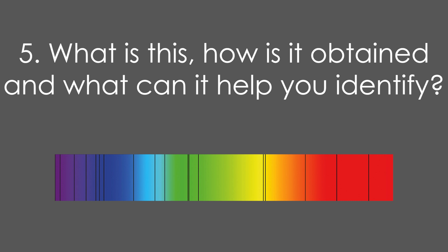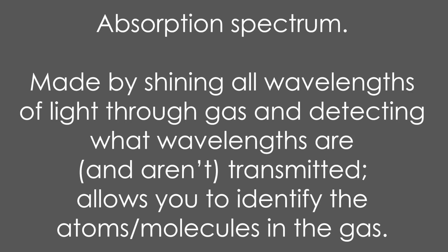Five, what is this? How is it obtained? And what can it help you identify? It's an absorption spectrum. It's made by shining all wavelengths of light through a gas and detecting what wavelengths are and aren't transmitted. This allows you to identify the types of atoms or molecules in the gas.